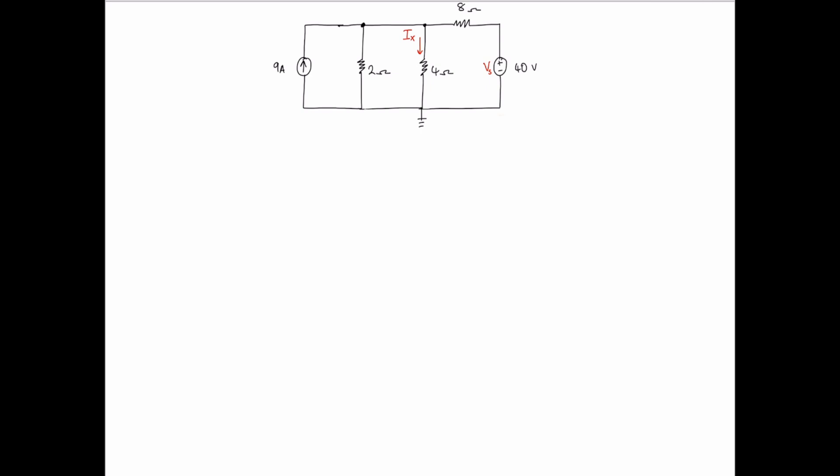Hello everyone, this is Inc. And in today's problem, we're going to use nodal analysis to find the current IX flowing through the 4 ohms resistor and the power supplied by the 40 volt voltage source.